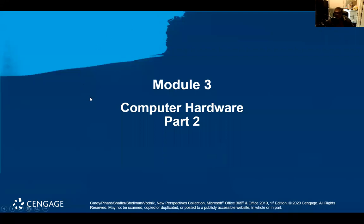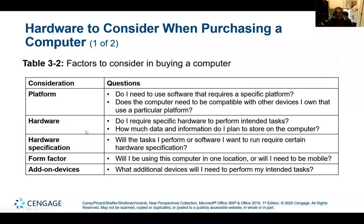Welcome to part two of computer hardware. So it's been a while and your computer is starting to slow down and it can't keep up with the things that you're trying to do, so you decide you're going to purchase a new one. There are some questions you need to ask yourself. Do I need to use software that requires a specific platform — do you want a Mac, or maybe an IBM-based machine? Does the computer need to be compatible with other devices I own used for a particular platform?